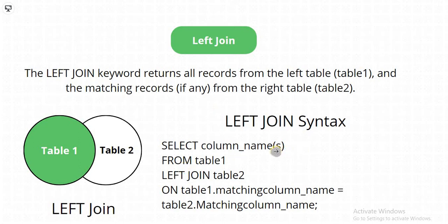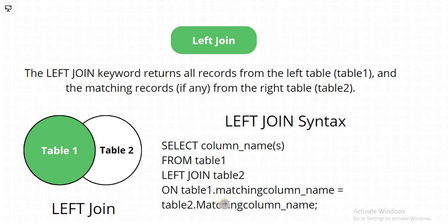Left join ka syntax hai: SELECT column name or names from table one, LEFT JOIN table two ON table one dot matching column name is equal to table two dot matching column name. Table one mein bhi wahi column hona chahiye aur table two mein bhi wahi column name hona chahiye, tabhi join hum log nikal sakte hai.